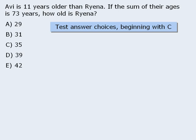Now why should we test answer choice C first? You will find that the answer choices on the GRE are listed in either ascending or descending order. So if you test answer choice C and it does not yield the correct answer, you can sometimes eliminate other answer choices that are either less than or greater than C.